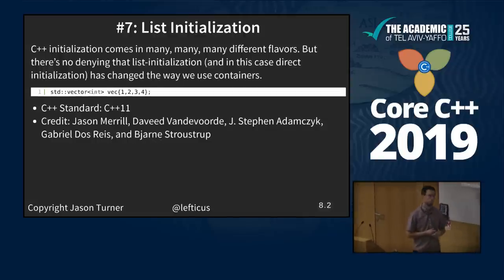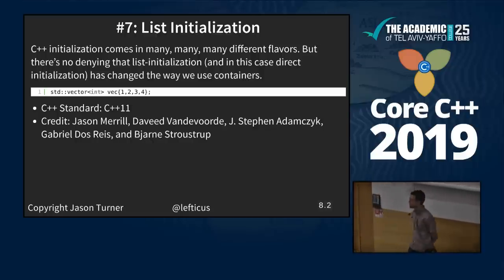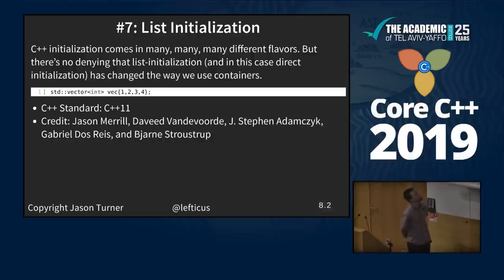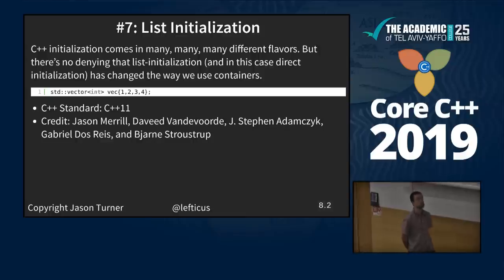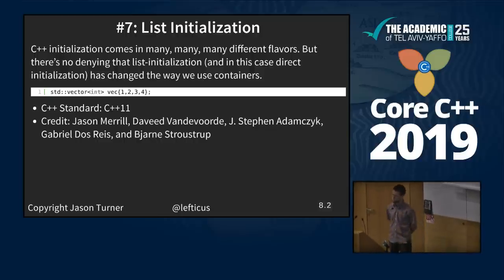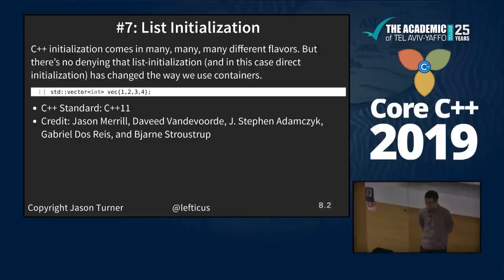List initialization. C++ initialization comes in a lot of different forms — I think it's actually 17 different types. But no one can deny that list initialization has changed the way we use containers. This is much better than having to do push_back four times. C++11. This is where things start to get complicated — we're looking at Jason Merrill, David Vandevoorde, Steven Adamczyk, Gabriel Dos Reis, and Bjarne Stroustrup. Lots of people involved.